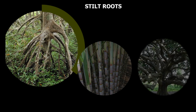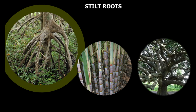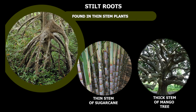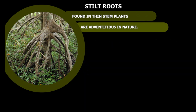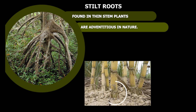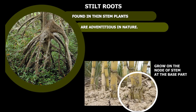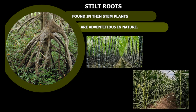Stilt roots are found in thin-stem plants and help them stay erect. They are adventitious in nature and grow on the nodes of the stem at the base part. Sugarcane and maize plants have stilt roots.